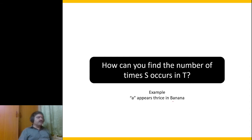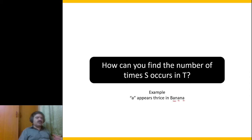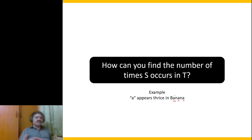Here is another problem: how can you find the number of times s occurs in t? For example, 'a' appears thrice in 'banana'. How do you know how many times that string appears in another string? This is a slightly trickier problem compared to the last one. Take a moment, pause the video and think how would you do it.